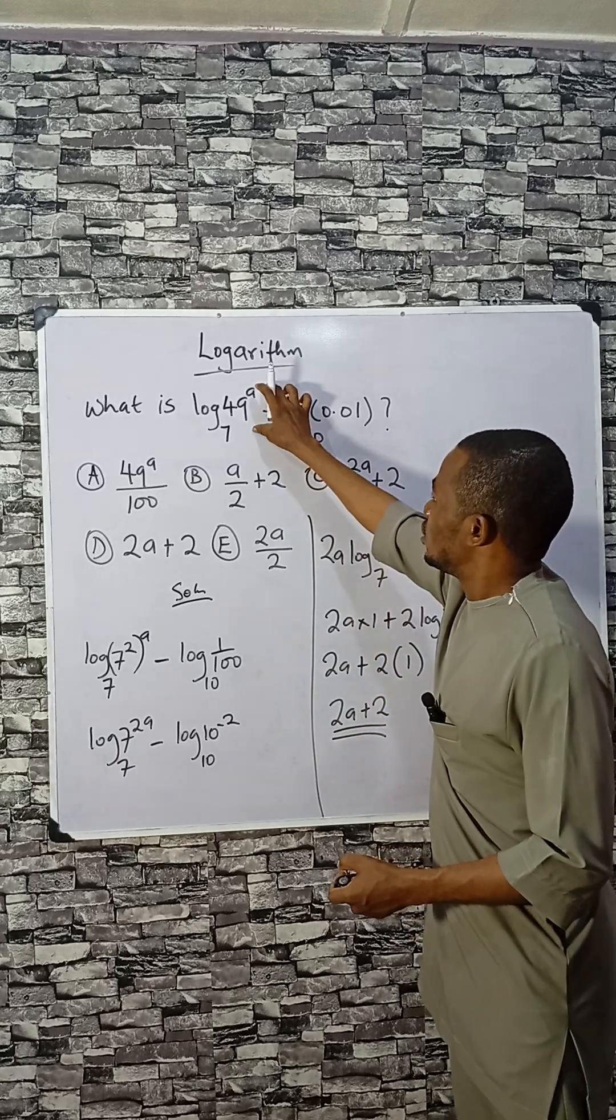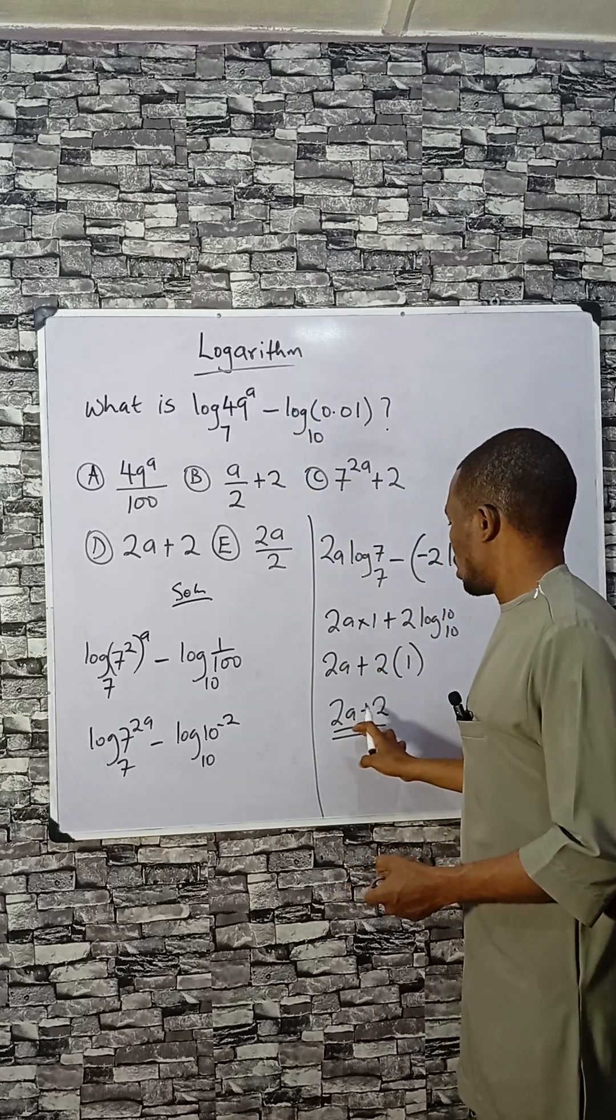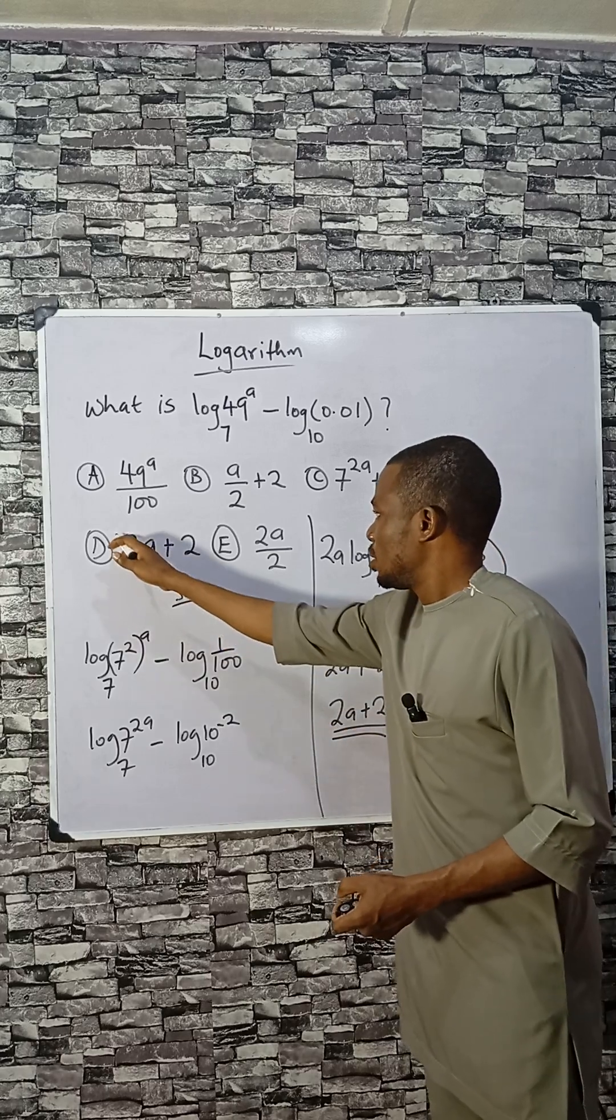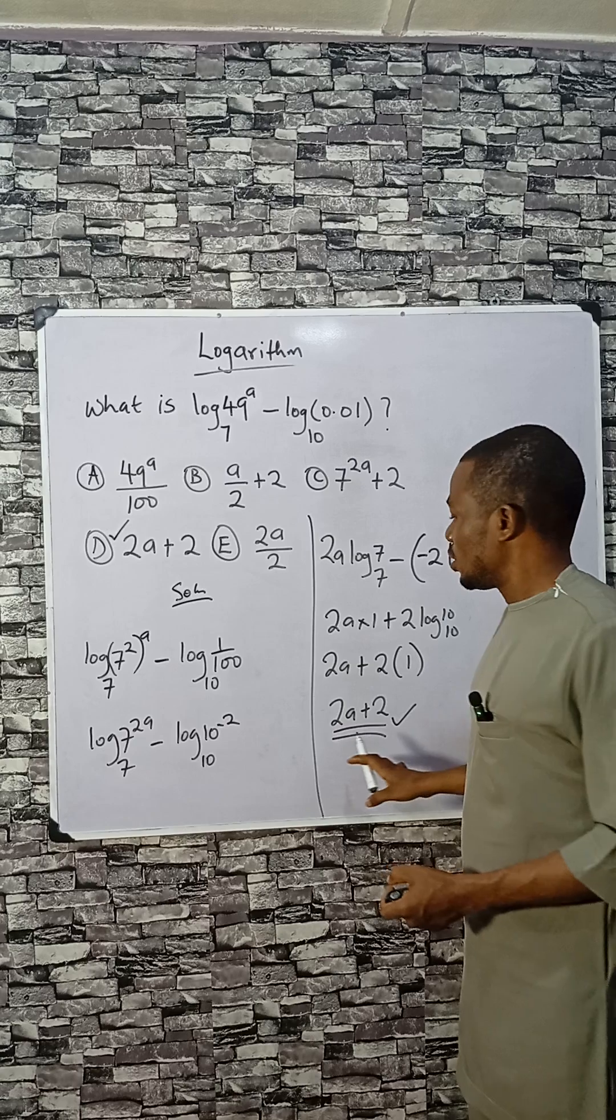So the value of this is just 2a plus 2. Check the options. D is very correct. So if you like this video,